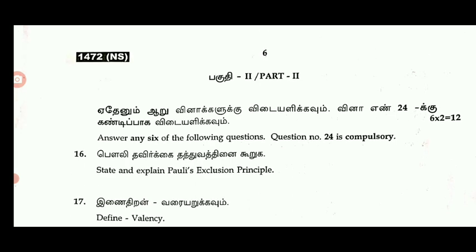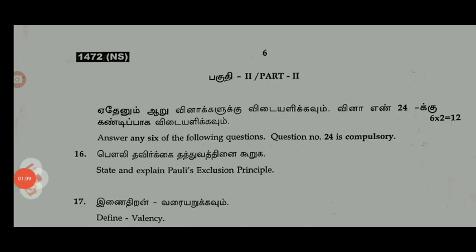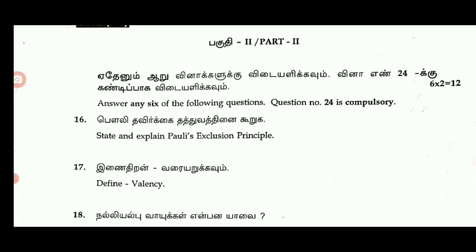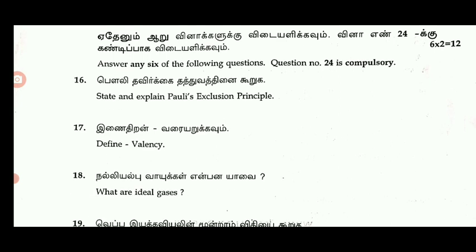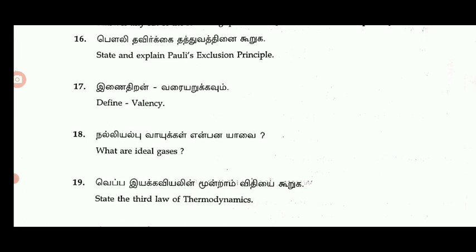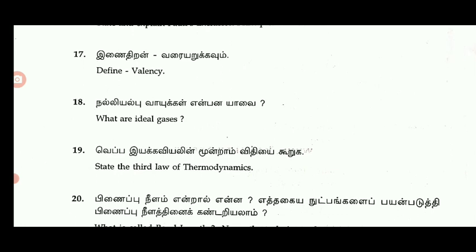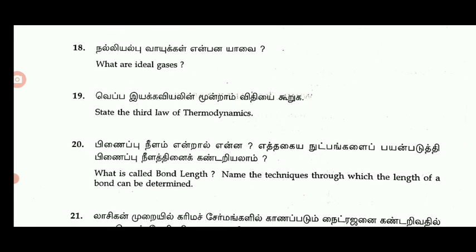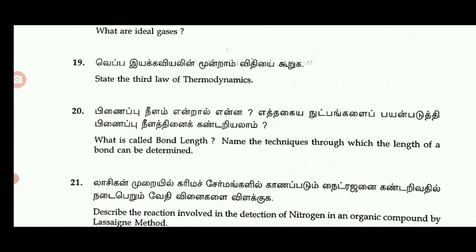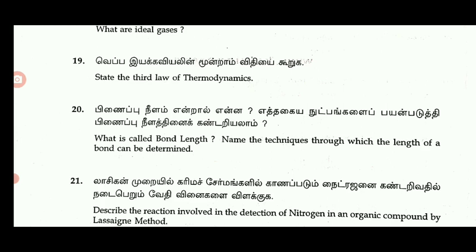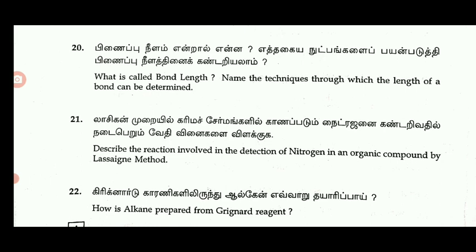First, 2-mark and 3-mark questions. The first 2-mark compulsory question: state and explain the Pauli exclusion principle. The next one: define valency. Then 4-mark: what are the ideal gases? Next: state the third law of thermodynamics. And: what is bond length? The length of a bond can be determined.